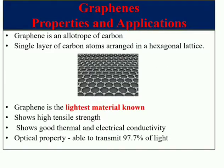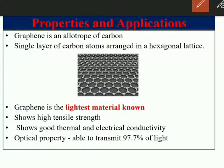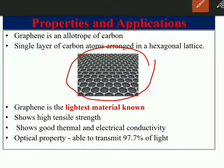Now let us move on to the last nanomaterial — graphene. Graphene is a single layer of carbon atoms arranged in a hexagonal lattice, as you can see on the screen. It is also the building block of graphite.